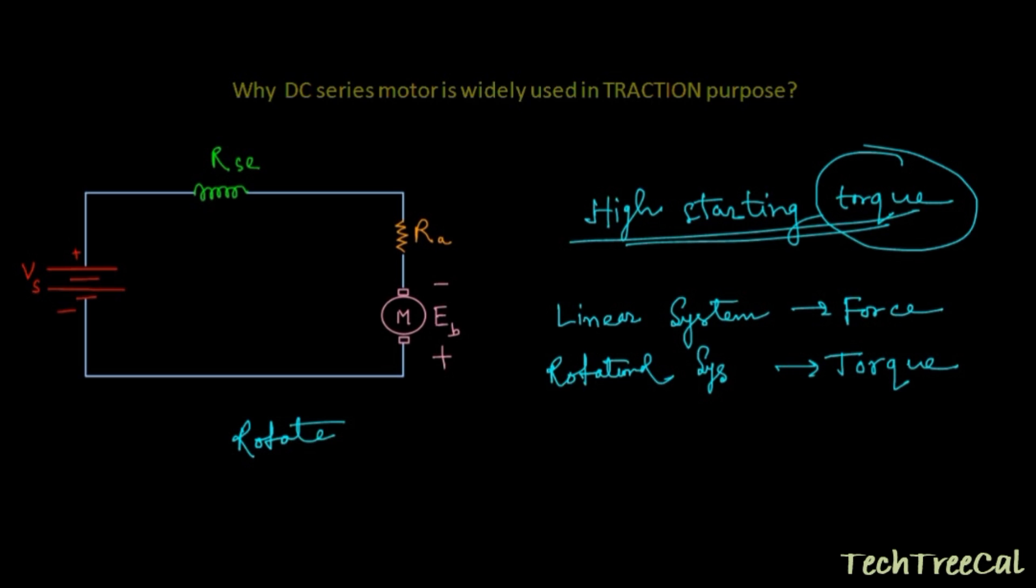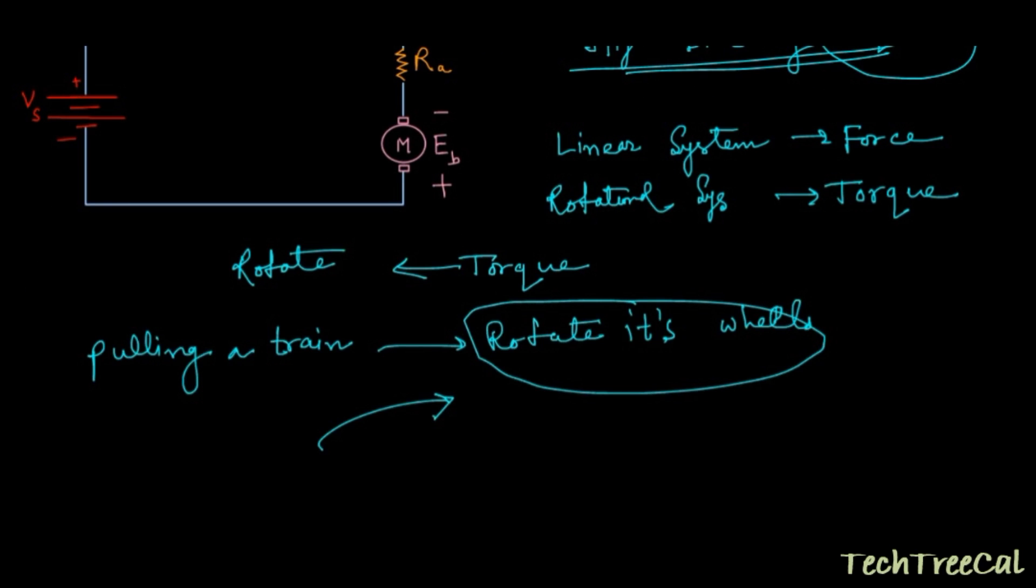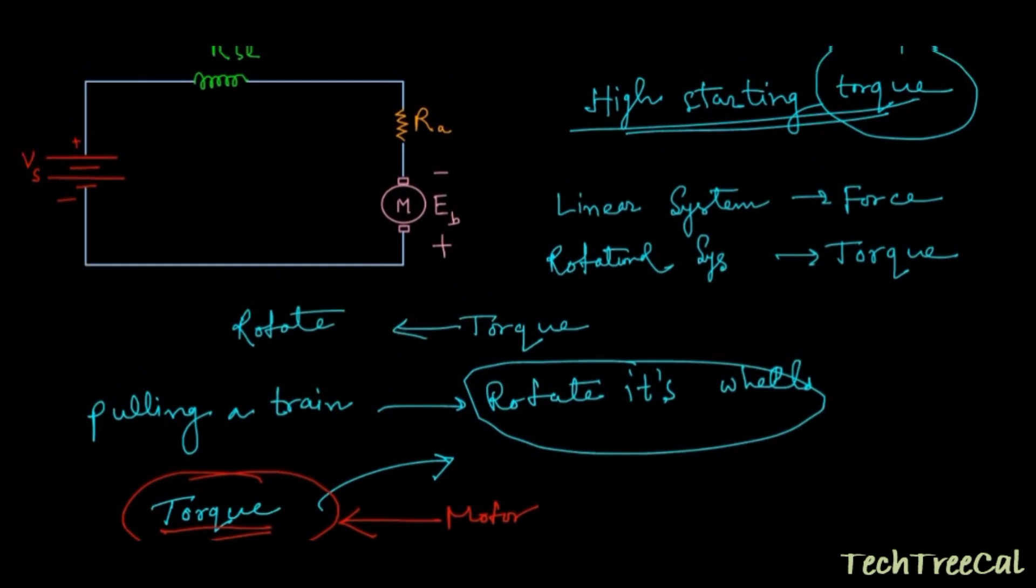Now if you are pulling a locomotive train then what we really need to do is to rotate its wheels. To rotate the wheels you need to apply a high amount of torque. For that you need to apply a motor which will be responsible for applying the torque.